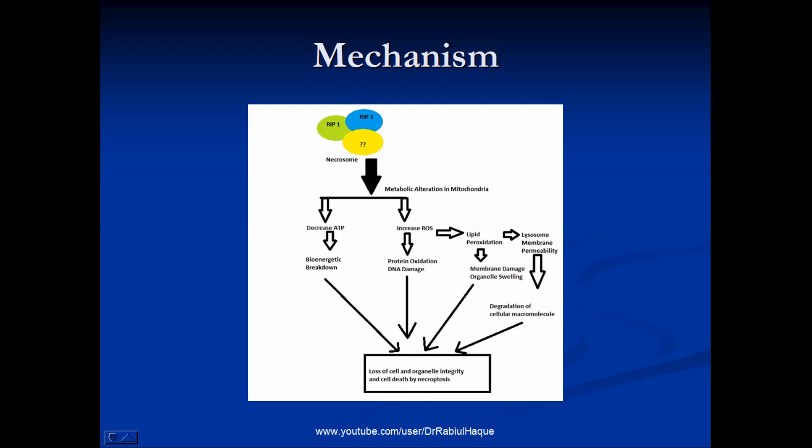So when there is metabolic alteration in the mitochondria, this regulation will be hampered, and that will result in increased accumulation of those reactive oxygen species. And what will be the outcome? That will result in protein oxidation, DNA damage, and lipid peroxidation.